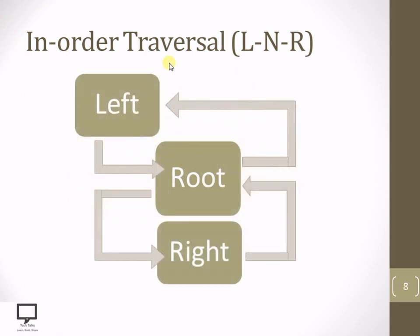How to perform this traversal? Start with the root node and check whether the root is having a left child or not. If it is having a left child, step down to left and make it the new root. Again check whether the current root is having its left child. We perform this loop continuously. If the current root has no left child, then check for a right child, make it the root, and again check for a left child. Continuously follow the sequence: left, root node, then right.